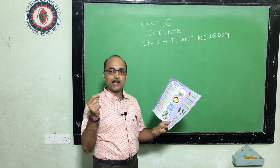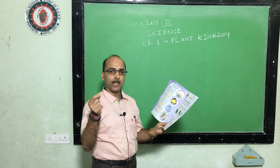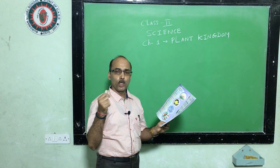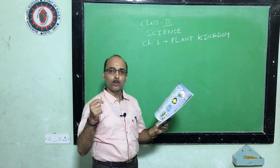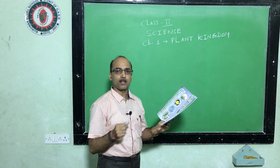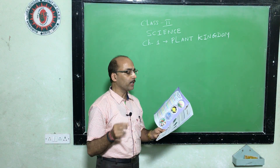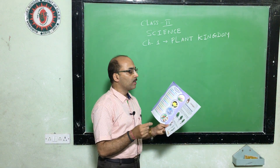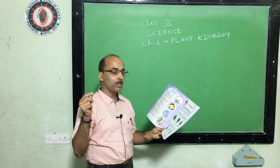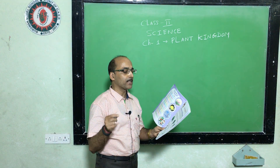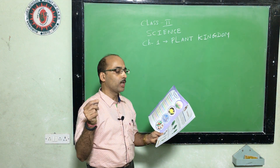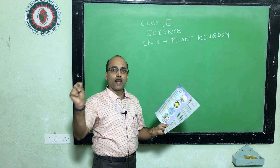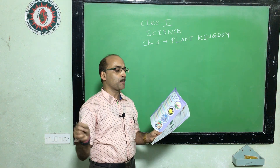Like us, plants are also living things, but plants do not move from one place to another, just like human beings. They only show movement of their parts. Some plants are big and some are tall, some are small and some are short. Some plants grow on the ground and some grow in water.